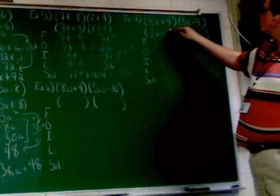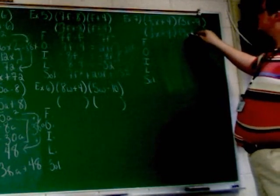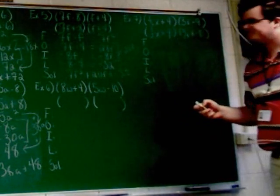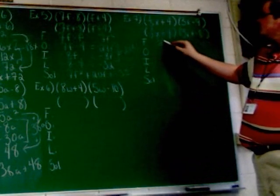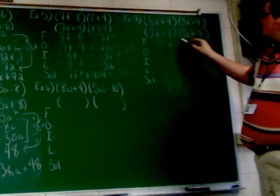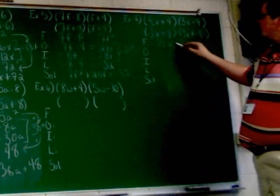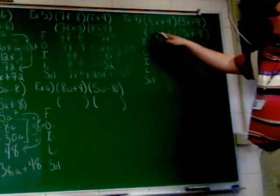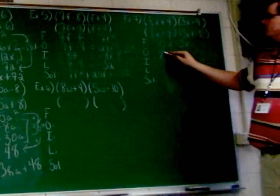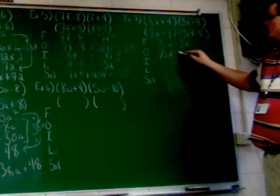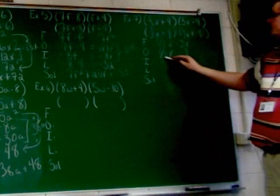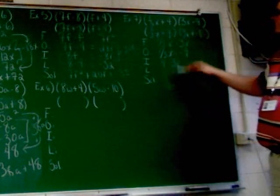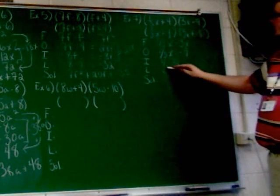So, you've got 1/3 X plus 4, 3X plus negative 9. So, we're going to go for the firsts here. 1/3 X and 3X. Outside terms are 1/3 X and negative 9. Inside terms are 4 and 3X. Last terms, 4 and negative 9.